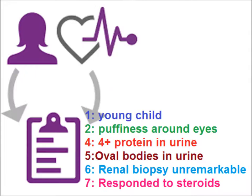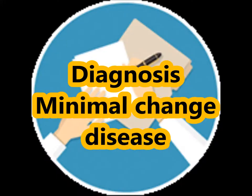Considering the history — a young child with puffiness around the eyes, 4+ protein in urine which falls into the nephrotic range, and a renal biopsy that is unremarkable and responded to steroids — we can make the diagnosis of minimal change disease.